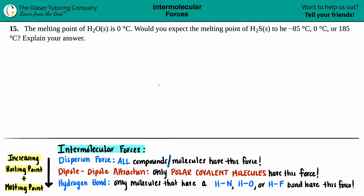Number 15. The melting point of H2O solid is 0 degrees Celsius. Would you expect the melting point of H2S solid to be negative 85 degrees Celsius, 0 degrees Celsius, or 185 degrees Celsius? Explain your answer.